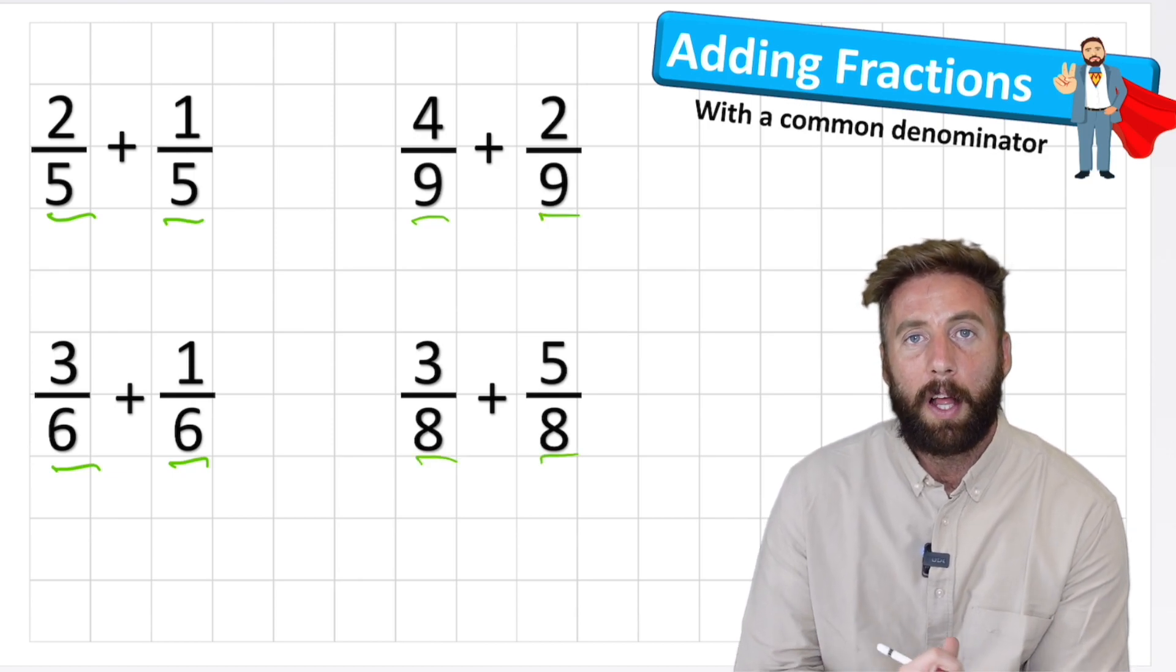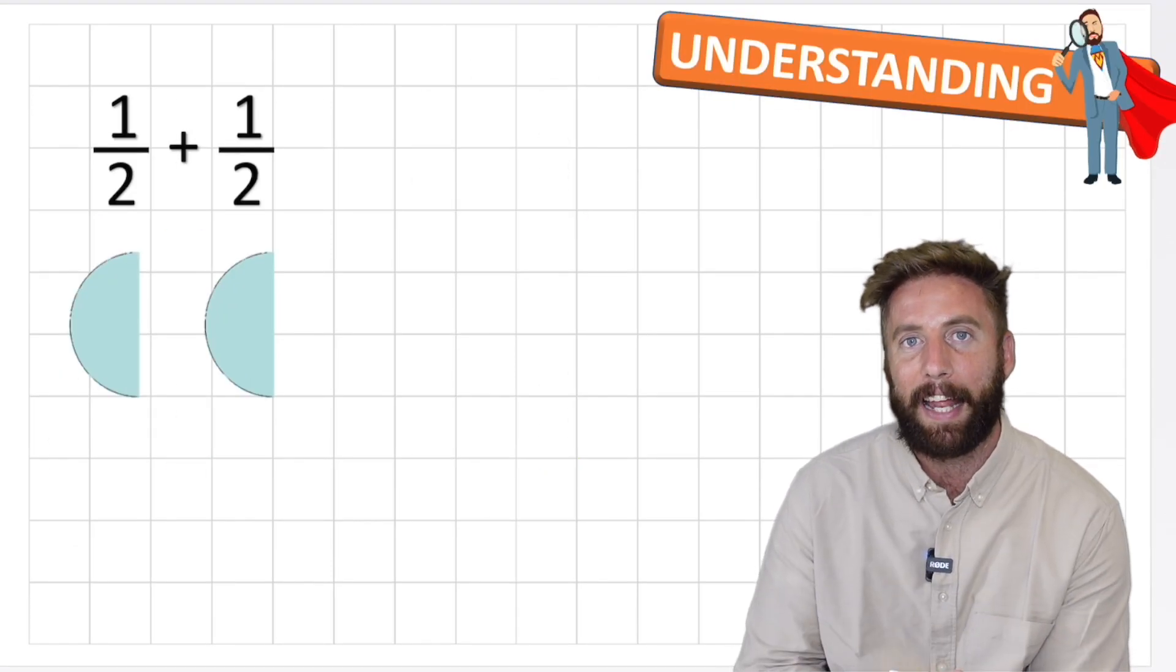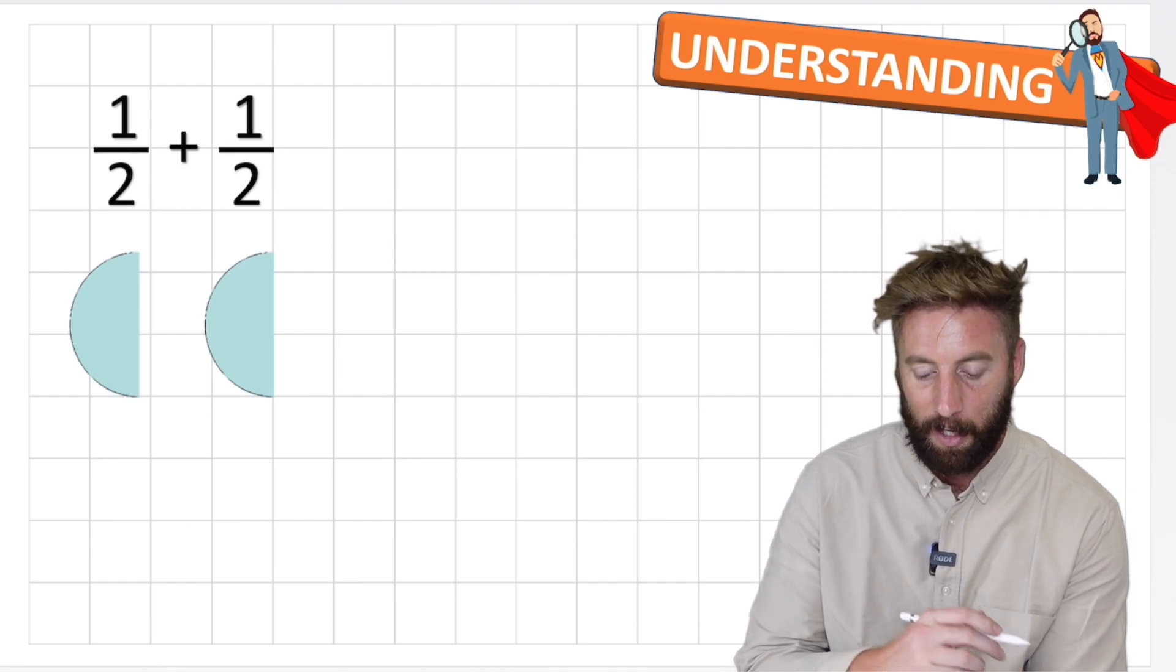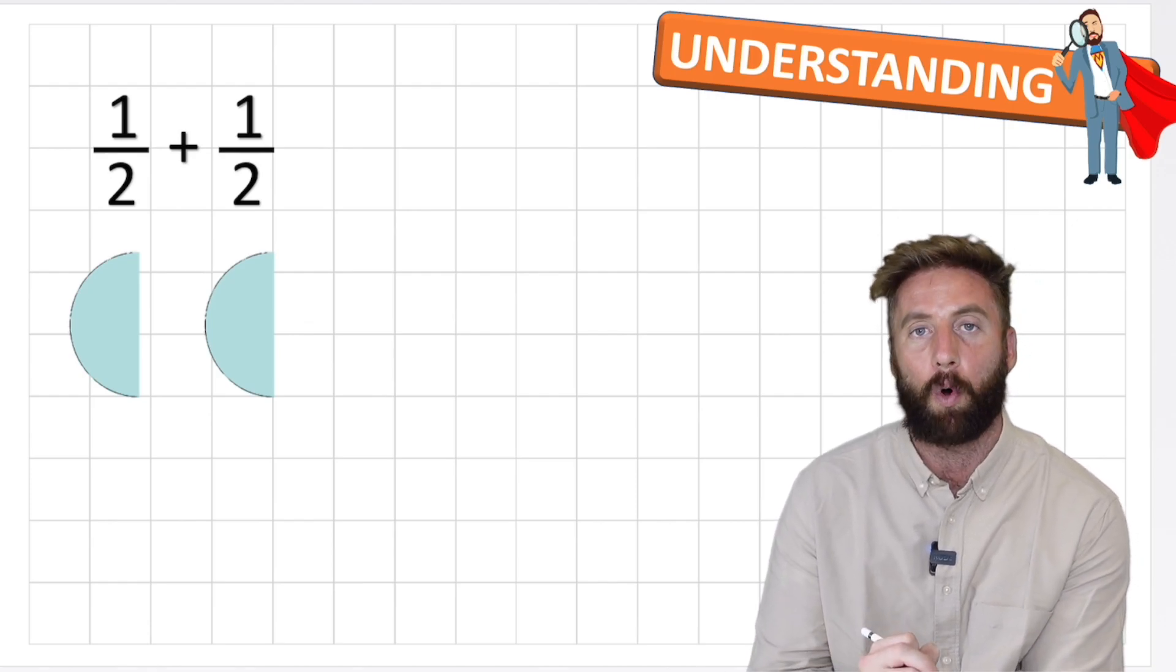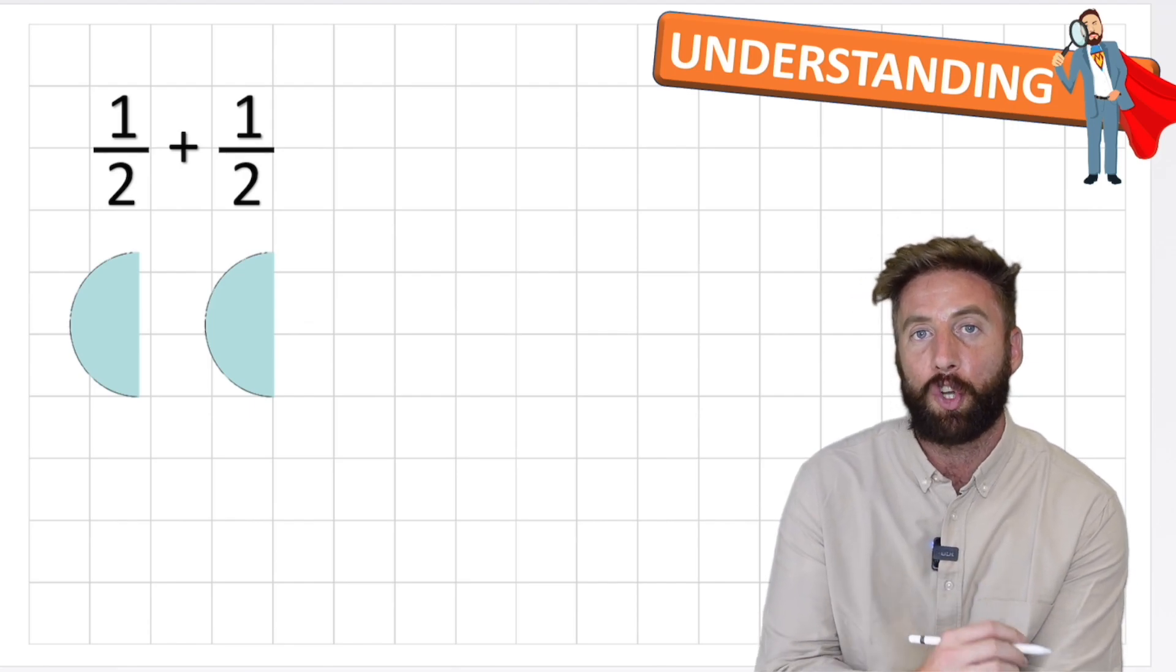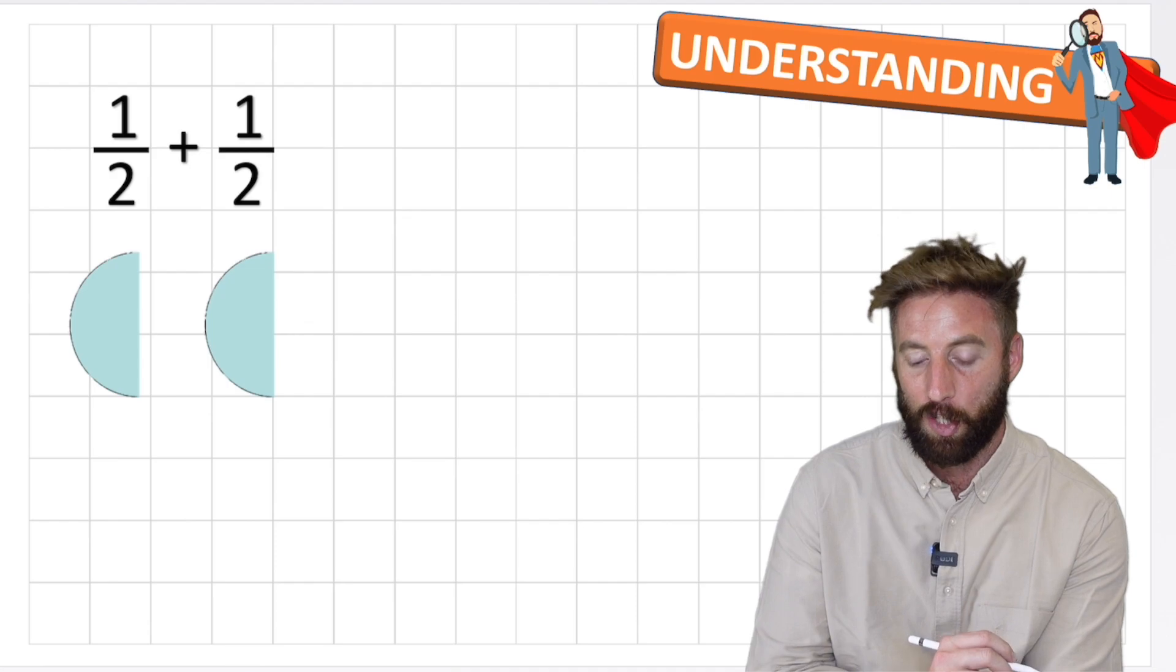Okay, so let's first jump into our understanding stage to understand how this works before we have a go at understanding the method. So let's have a look at this first one together, super simple question, one half and one half. Well we know that if we add one half to one half we should get a whole, so let's try to get to one whole in this question.